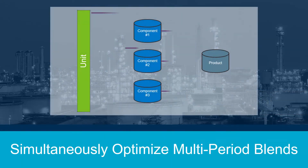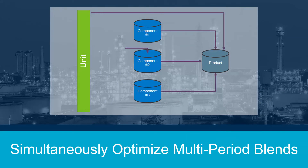Aspen Refinery Multi-Blend Optimizer is a powerful refinery blending solution that reduces off-spec blends and quality giveaway by simultaneously optimizing multi-period blends for short and long-term campaigns.